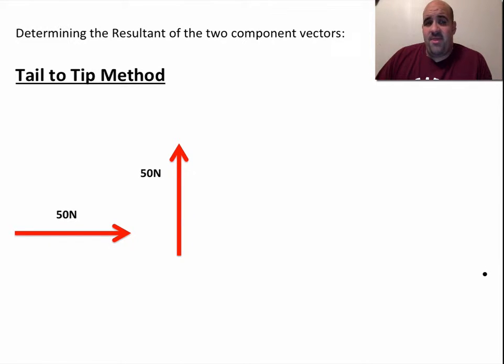We're going to look at the tail-to-tip method, the parallelogram method, and a graphical method where you draw and measure angles to scale using a ruler and a protractor. All three methods are relatively simple. Our moneymaker is going to be the tail-to-tip method, so we're going to start with that one first.